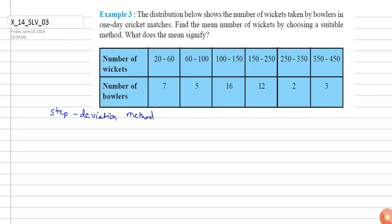In a step deviation method, we calculate ui for each xi as xi minus a divided by h, where h is the upper limit minus lower limit.